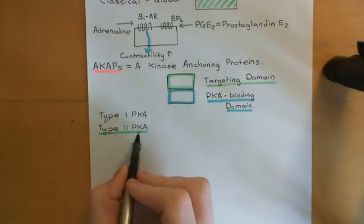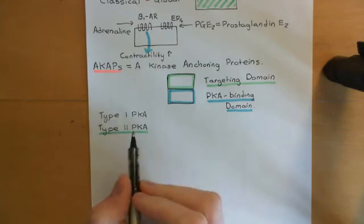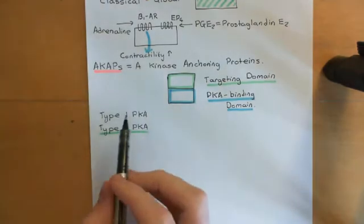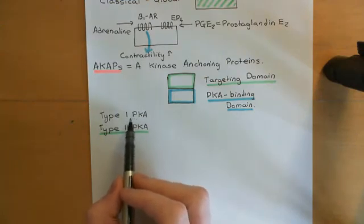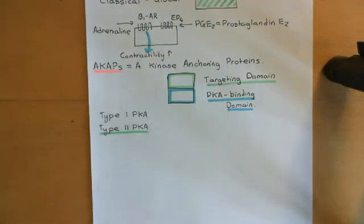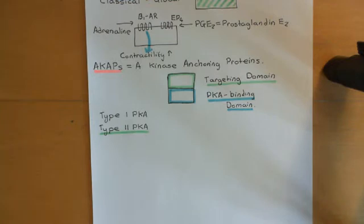Most AKAPs bind type 2 protein kinase A's to their protein kinase A binding domain. A few bind type 1 protein kinase A's, and some AKAPs bind both type 1 and type 2. Now I want to discuss the actual interaction between the A-kinase anchoring protein and the regulatory subunit dimer of protein kinase A, and how the enzyme behaves in both the inactive and active states.